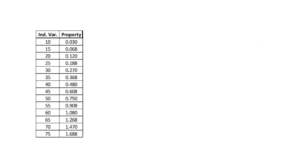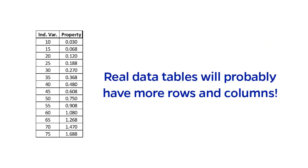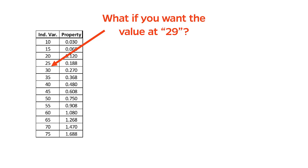Let's say this is your data table. Keep in mind that this is just a simplified example, and that a real data table might be much more complex. Suppose you wanted to know the value of this property at 29. However, as you can see, the table only has entries for 25 and 30.